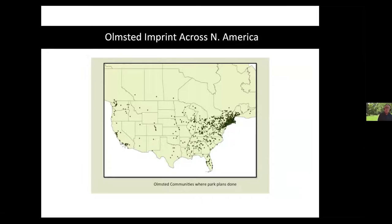If you add in the park designs and landscapes carried out by the two sons and the Olmsted Brothers firm, the imprint across the geography of North America is simply astounding: 700 public parks, and about 6,000 commissions in the life of the Olmsted Brothers firm. Some of those commissions remained ideas only on paper; most were completed at the ground level in some fashion.